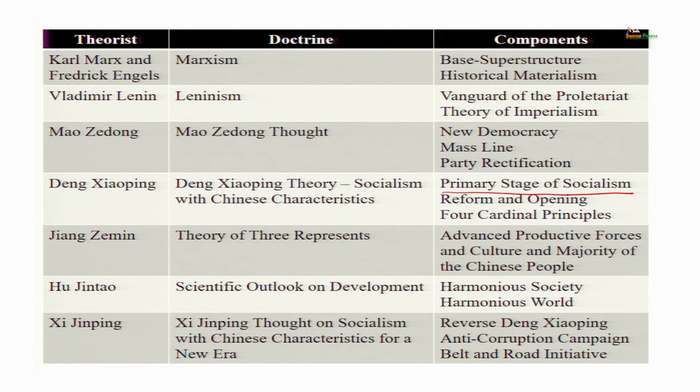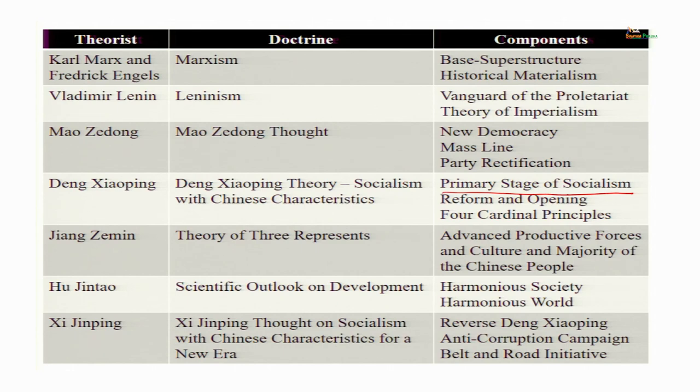Mao Zedong himself initially believed in new democracy — that China cannot immediately become a socialist society after foundation of the People's Republic. He believed there should be a period of new democracy with a coalition of the working class including peasants. Peasants and workers supported by other classes would all come together in a people's democratic dictatorship. But gradually he came to believe that there were capitalist roaders within the Communist Party — although the property had been nationalized and land collectivized, a capitalist mindset remained within the leaders of the party.